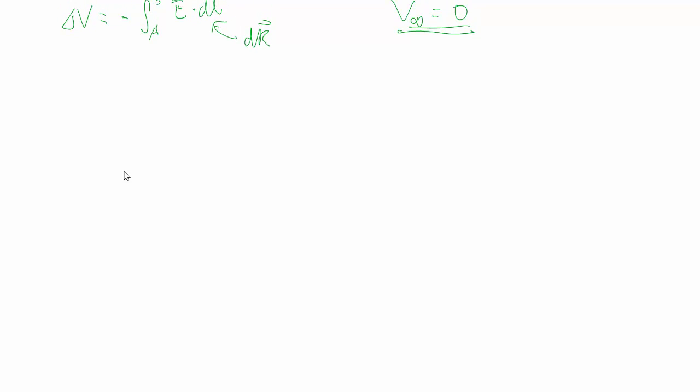So first case, we have r is greater than r3. This is the case where we're outside the shell even. Because the integral only gives us the change in potential to get the potential at any given point, we need to do a slight change here.